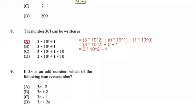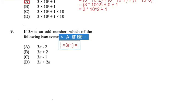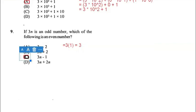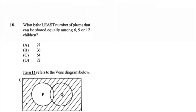Number nine: if 3n is an odd number, which of the following is an even number? Substitute n equals 1, so 3 times 1 equals 3, which fulfills the criteria of 3n being odd. Multiply out all the answer choices to see which results in an even number. The answer is C, giving 3 times 1 minus 1 to give 2. All others still result in an odd number. Even numbers are divisible by 2 without a remainder.